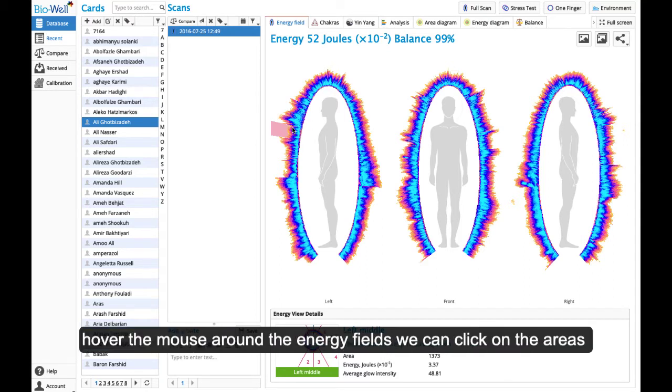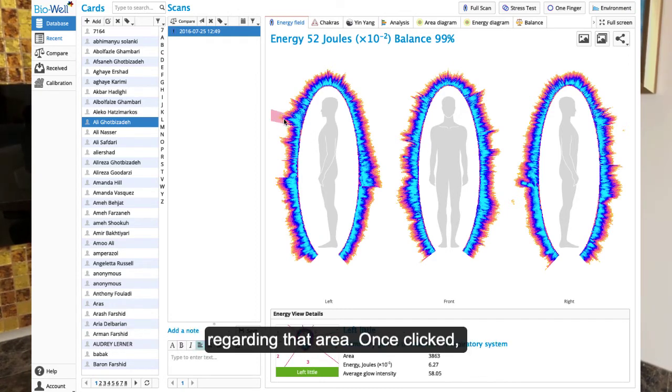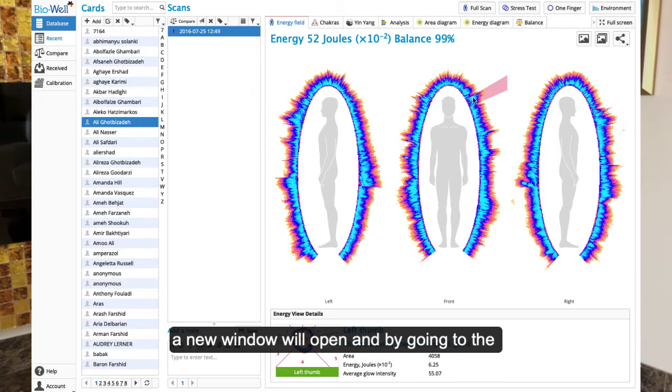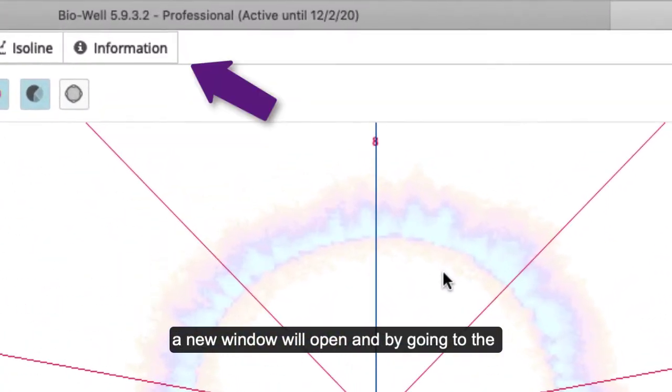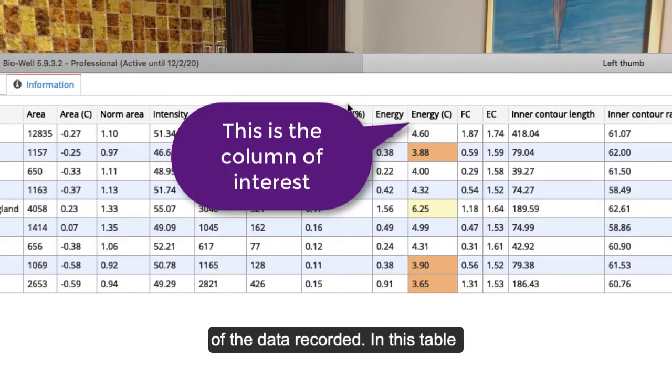Once we hover the mouse around the energy fields, we can click on the areas of concern that get highlighted in red to view more details regarding that area. Once clicked, a new window will open and by going to the information tab, we can access the details of the data recorded.